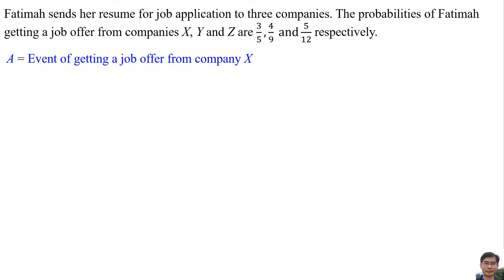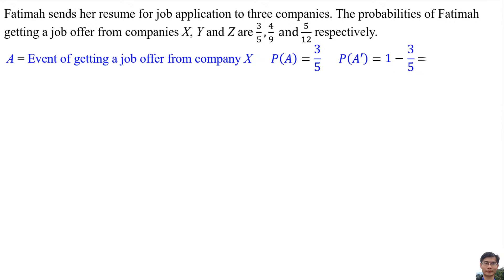Let A be the event of getting a job offer from company X. So the probability of event A is 3 over 5. The probability of the event of not getting a job offer from company X is 1 minus 3 over 5, which equals 2 over 5.